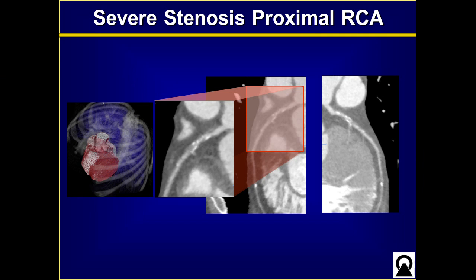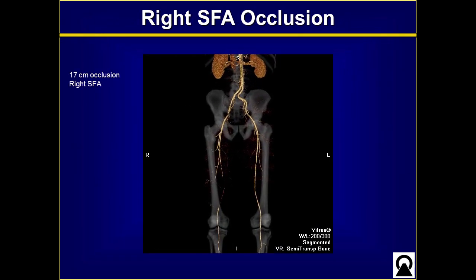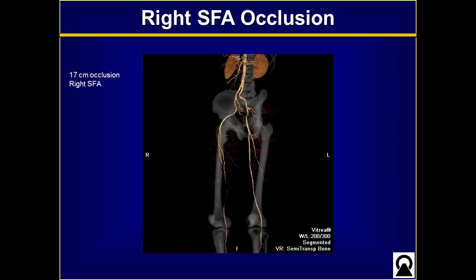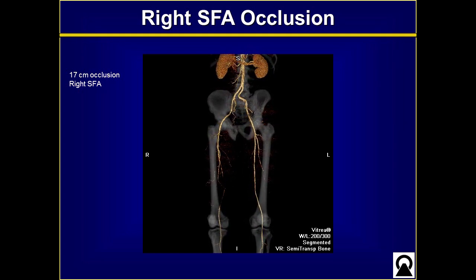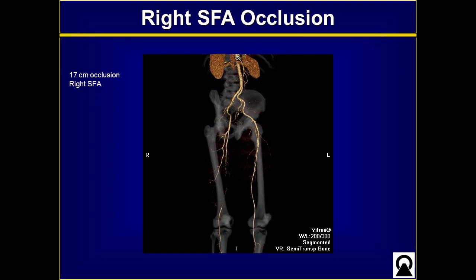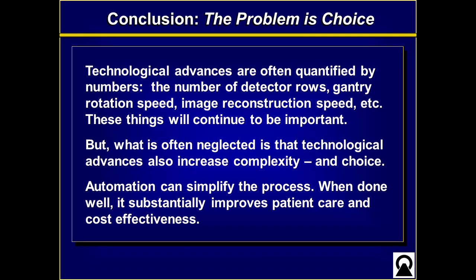Here's what the images look like: a severe stenosis of the proximal right coronary artery, and during the same exam a severe stenosis — or rather occlusion — of a long segment of the right SFA, all from one injection automatically. To conclude: technological advances are often quantified by numbers — detector rows, gantry rotation speed, image reconstruction speed — and these things are important. But what's often neglected, and what I learned, is that technological advances inevitably increase complexity and increase choice. Automation can simplify this process, and when done well it substantially improves patient care and cost-effectiveness. Thank you very much.